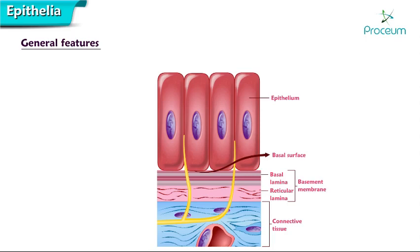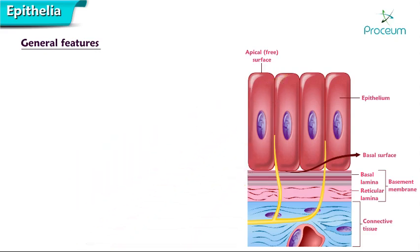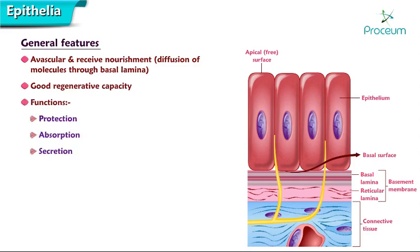The superficial or apical surface of the epithelium is free and exposed to air or fluid, and often shows modifications such as the presence of microvilli or cilia depending upon the function it is destined to perform. Epithelia are avascular and receive nourishment by diffusion of molecules through the basal lamina to which they are attached. Epithelium has good regenerative capacity. Its functions include protection, absorption, secretion, excretion, lubrication, sensation, and reproduction.